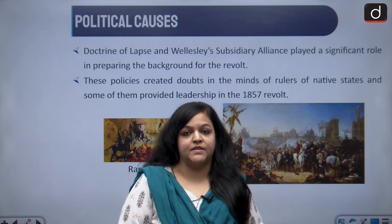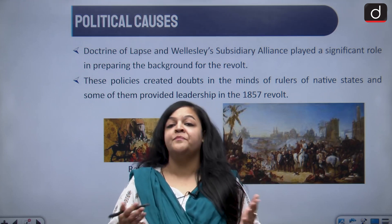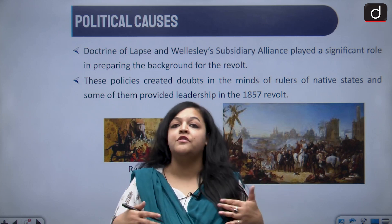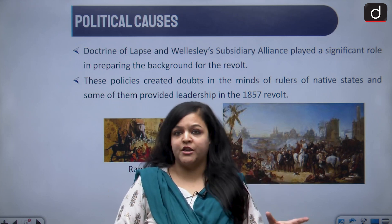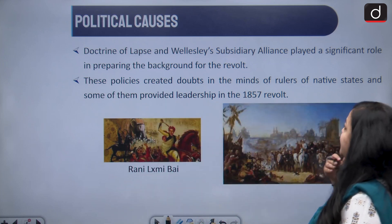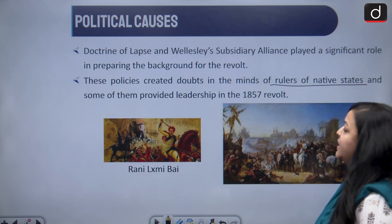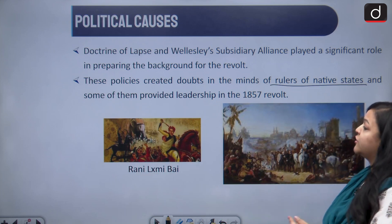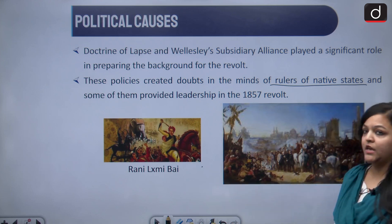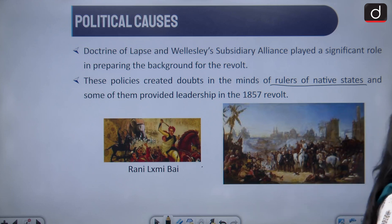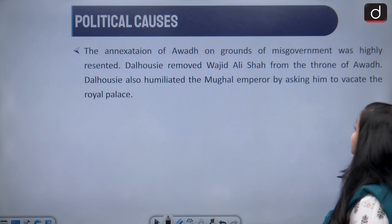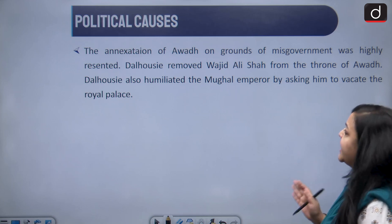These policies created a lot of doubt in the minds of people, particularly the royals who were affected. Rani Lakshmibai was affected; Nana Sahib was affected because he was the adopted son of Peshwa Baji Rao and could not get the pension Peshwa Baji Rao was receiving, simply because he was adopted. Some of these rulers actually provided leadership for the revolt — Rani Lakshmibai being one of them.